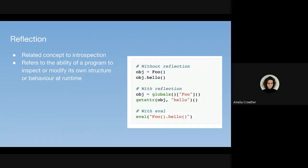A related concept is reflection — the ability of a program to inspect or modify its own structure or behavior at runtime. If you've used the getattr function in Python, you've probably done reflection. For example, getattr is not at all possible in a language like C because the names of fields when compiled in C are lost — they're converted into memory addresses. In a dynamic language like Python, the names of attributes are retained, so you can dynamically get attributes, and this is one type of reflection.